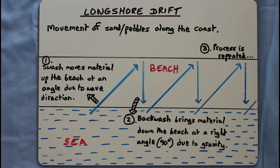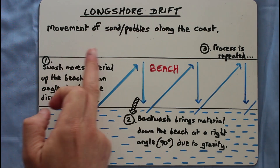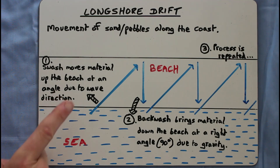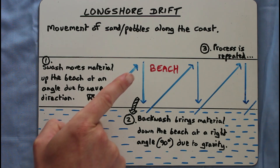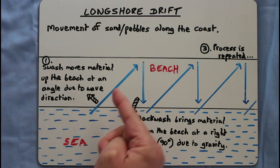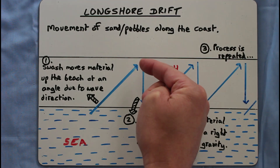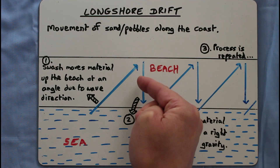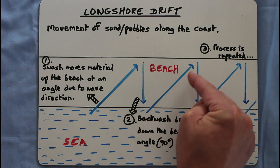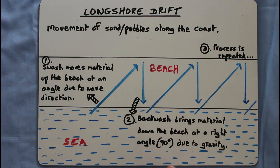Here is a summary of what we've learned so far. Longshore drift is the movement of sand, pebbles, and beach material along the coast. The prevailing wind pushes waves — the swash — up the beach at an angle matching the wind direction. When the water and material reach the top of the beach, momentum stops and gravity pulls the water straight back down into the sea at 90 degrees; this is called the backwash. The next wave repeats this process, moving material along the beach in a zigzag fashion.